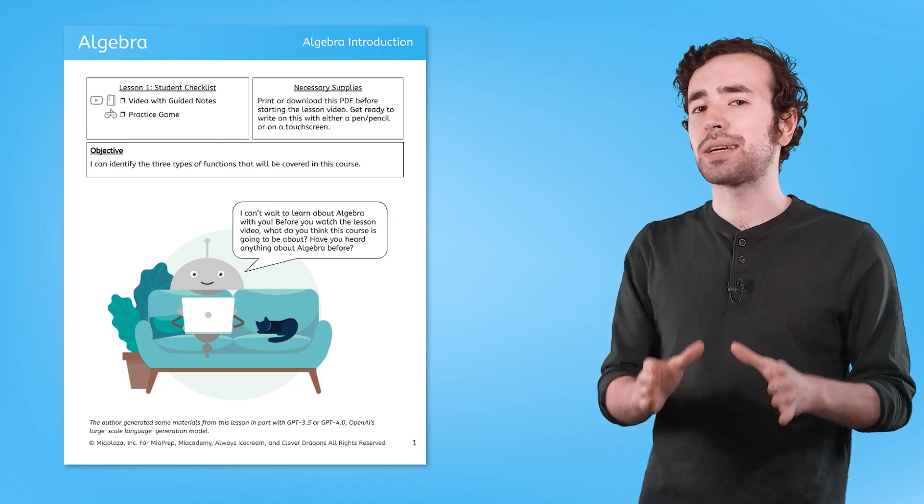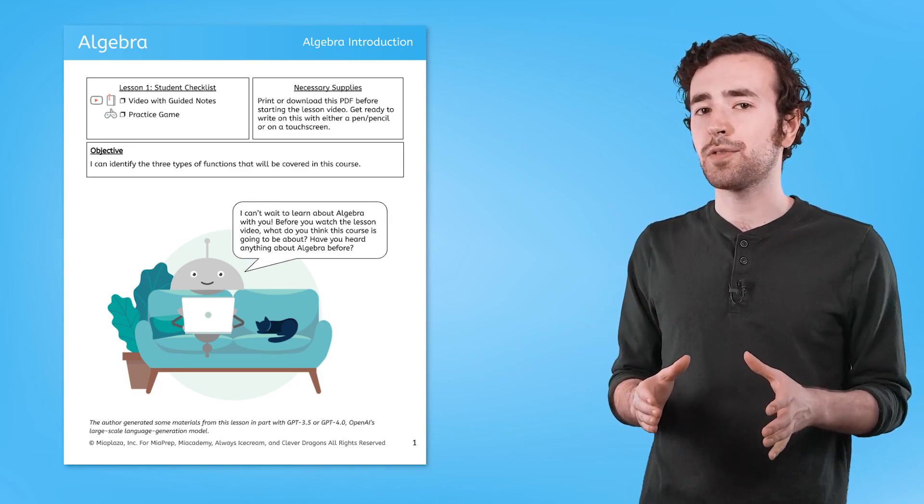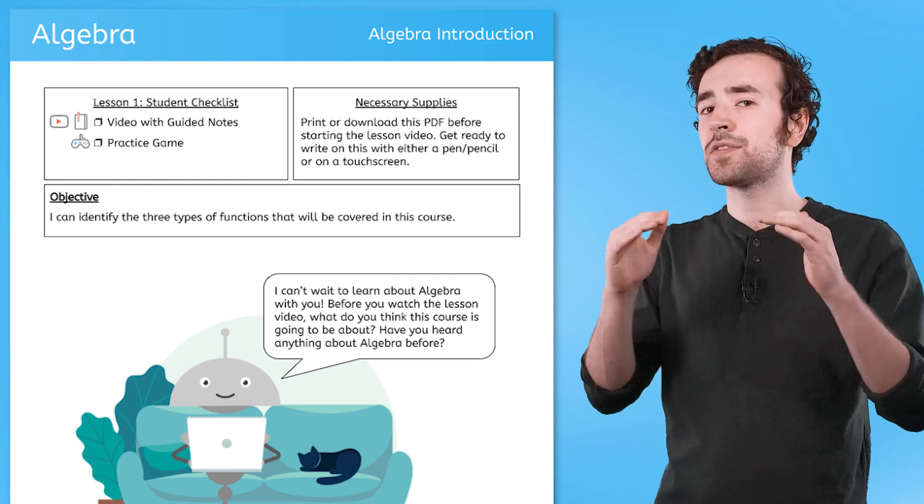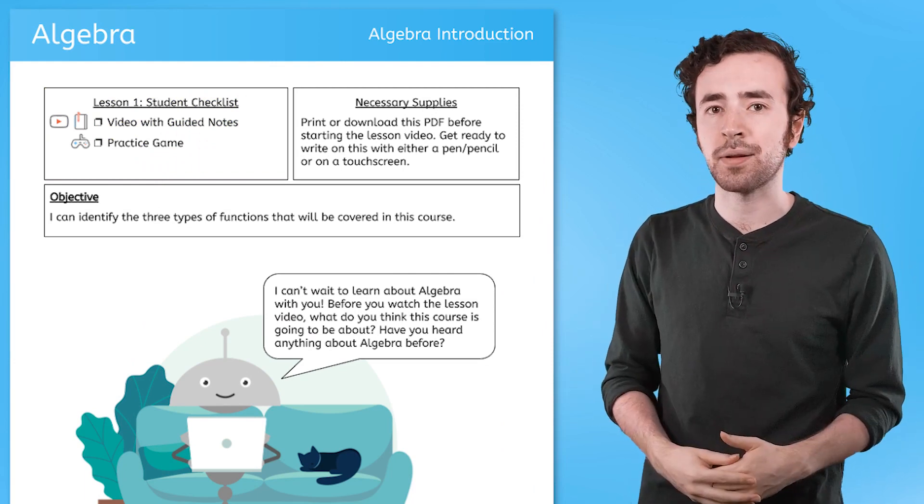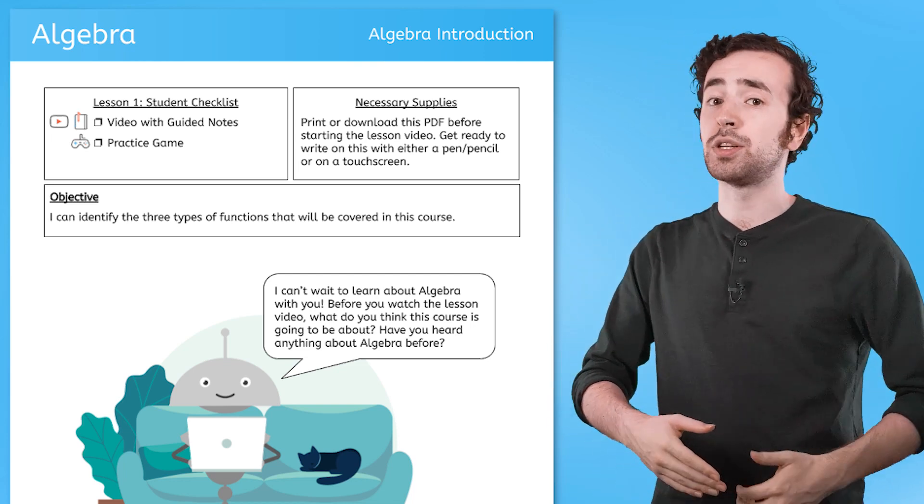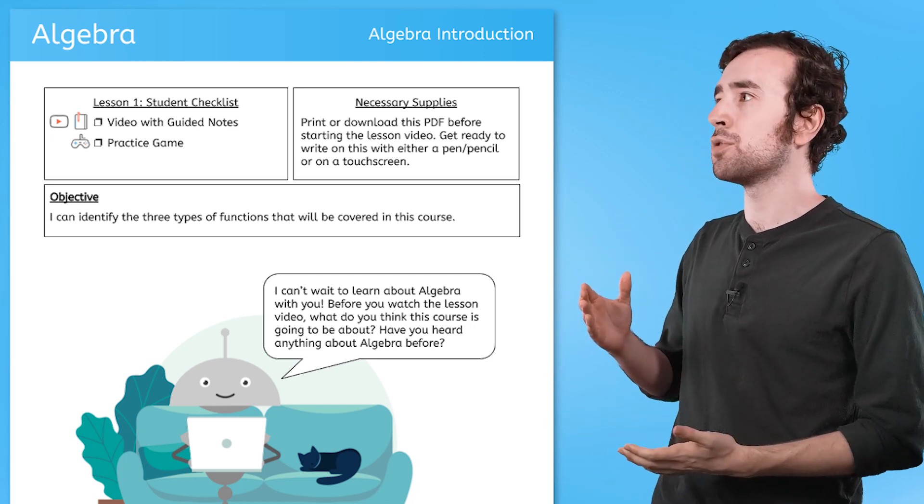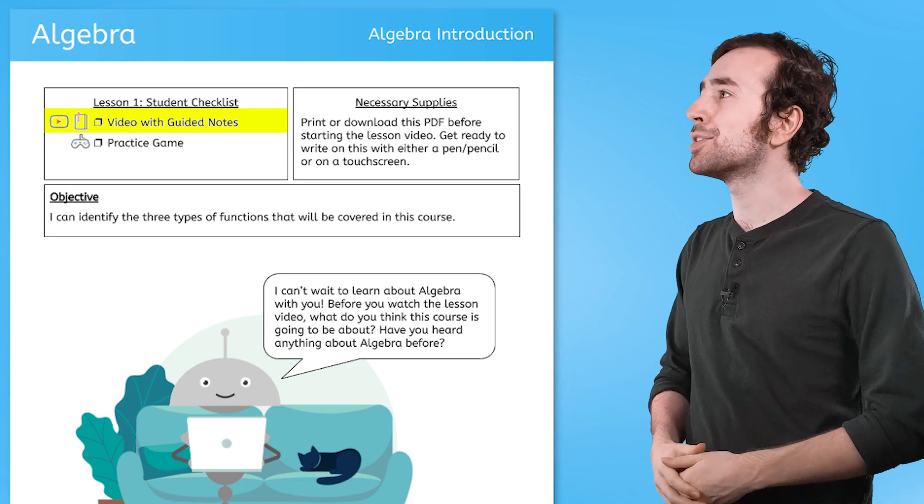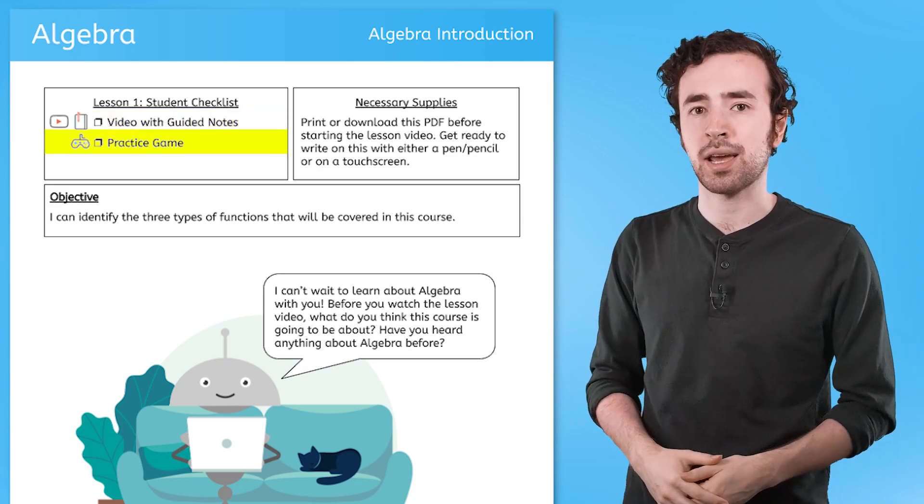One of the best parts of your PDF will be the student checklist. This is a list of tasks that you'll be completing for each lesson. For example, you'll see that the student checklist for this lesson has you watching this video lesson, taking some guided notes, and completing a practice game.